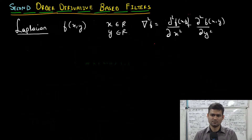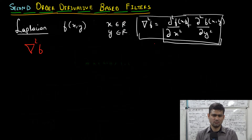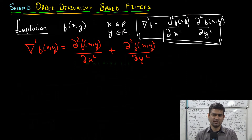So the Laplacian of a function is a scalar, and it is equal to del-squared f(x, y) over del x squared plus del-squared f(x, y) over del y squared. The Laplacian is just a summation of the second-order partial derivative of f with respect to x plus the second-order partial derivative of f with respect to y.